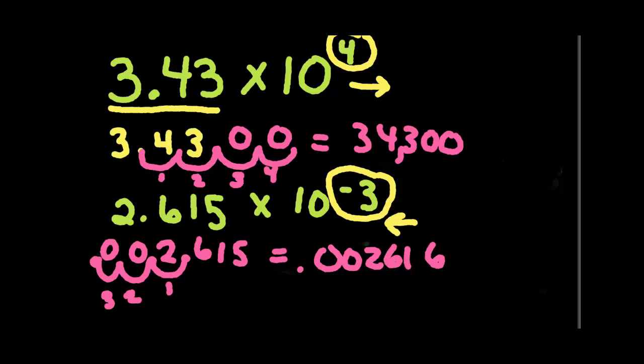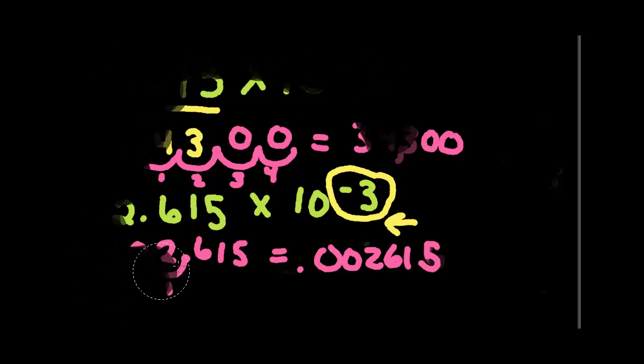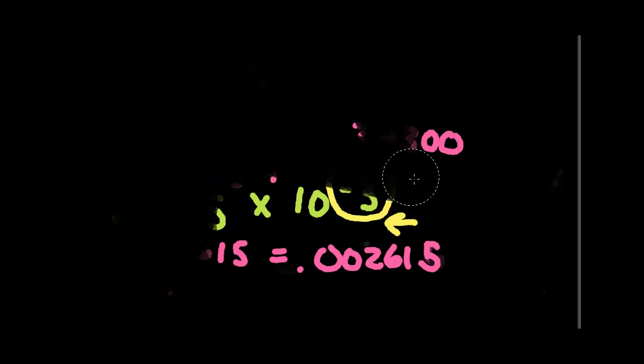Oops. Should be a five. So erase it and make that a five. There we go. We'll do two more. And that's really as simple as it gets doing this in this particular direction.